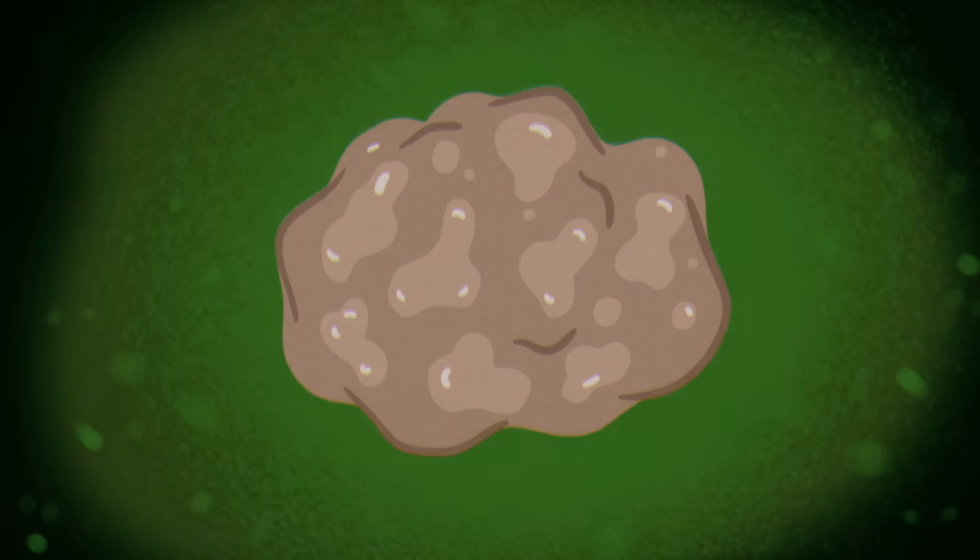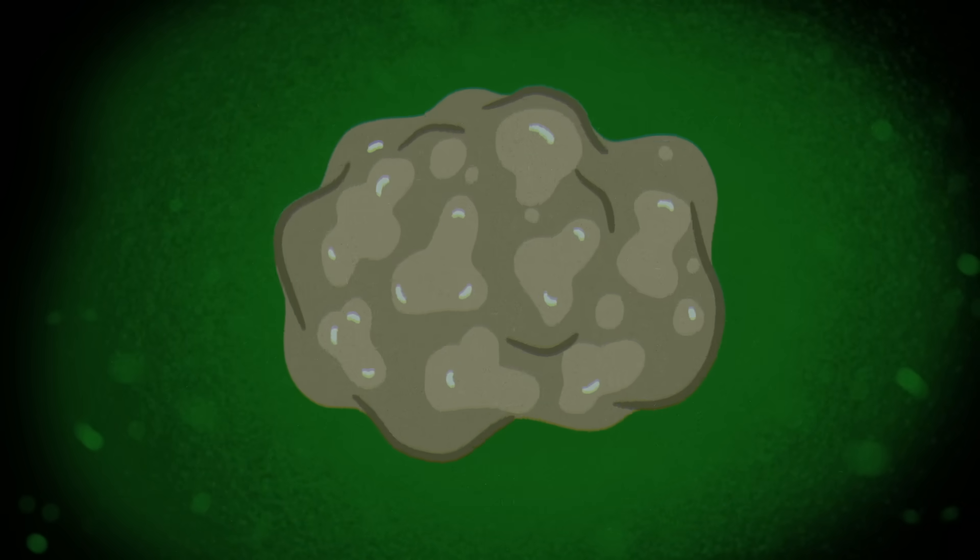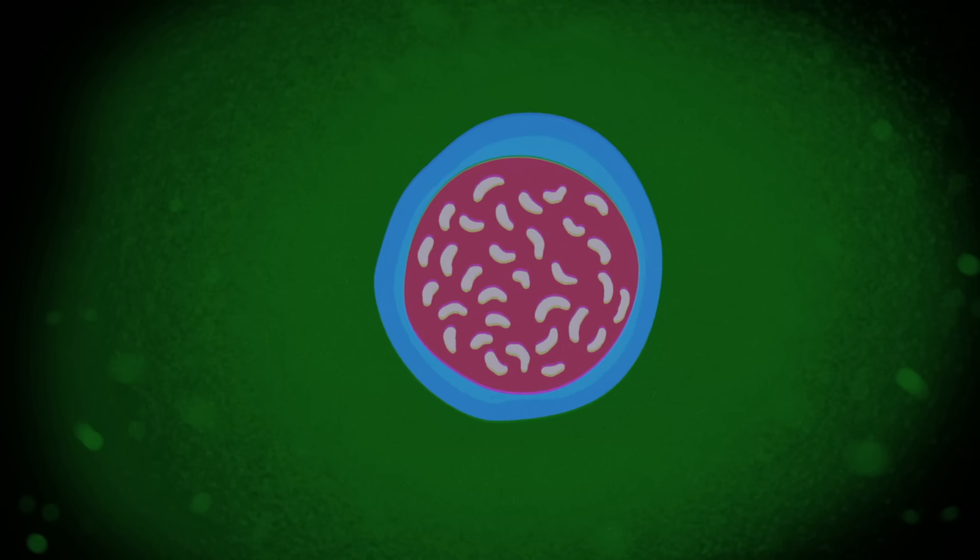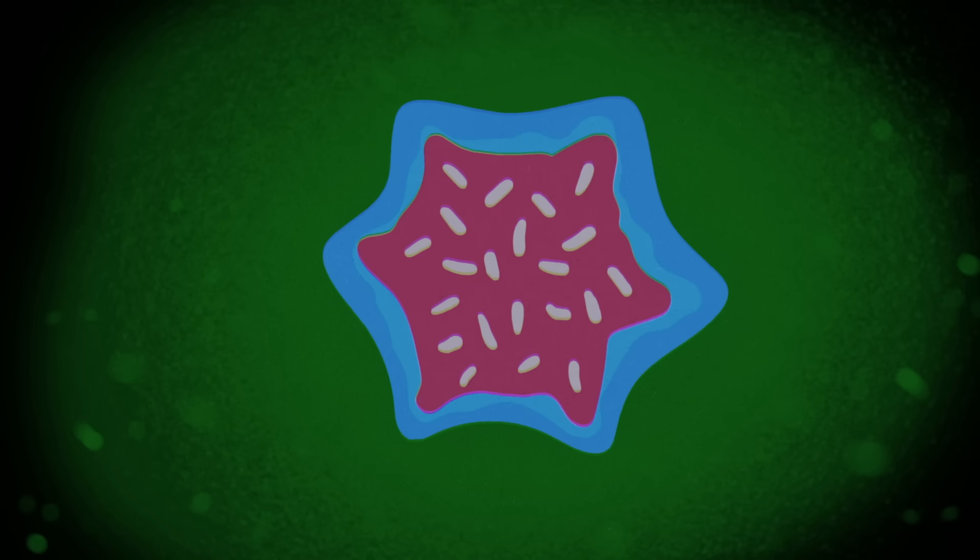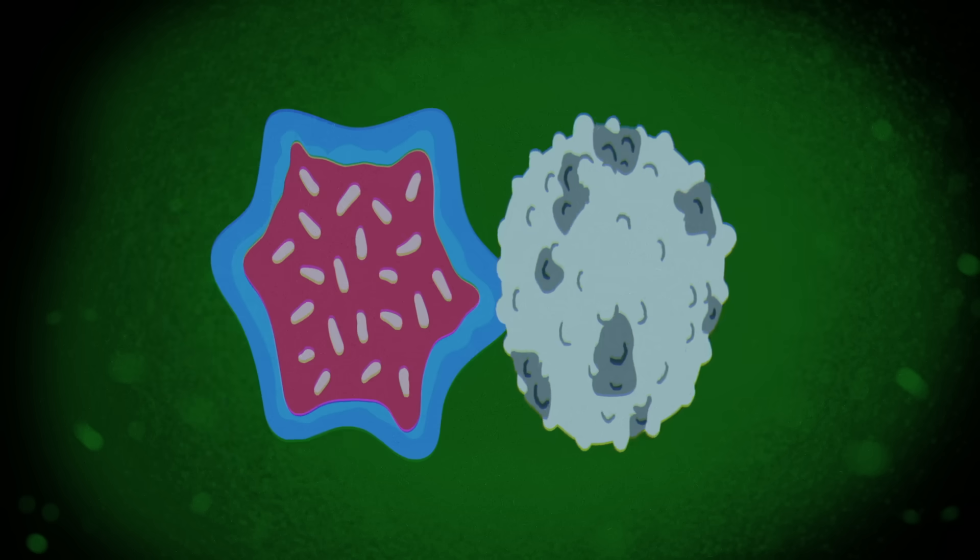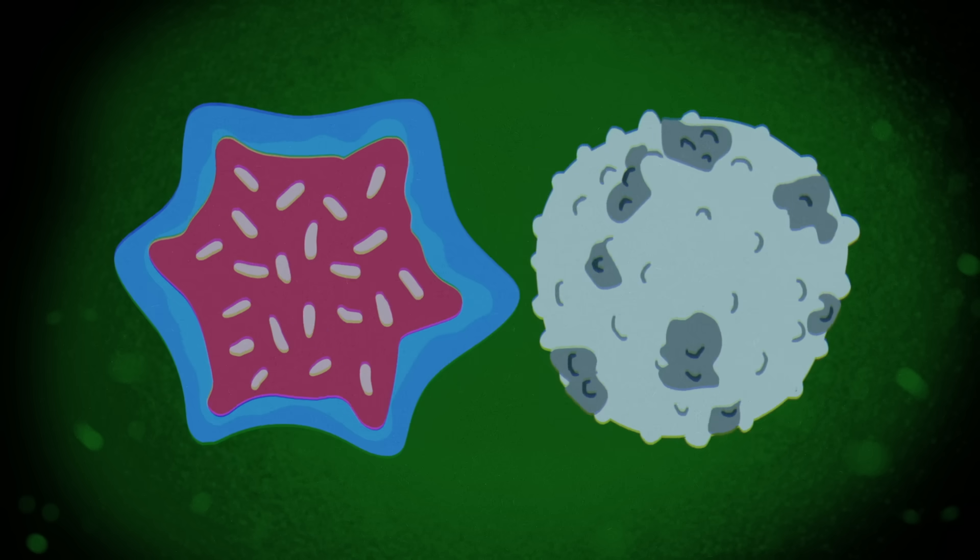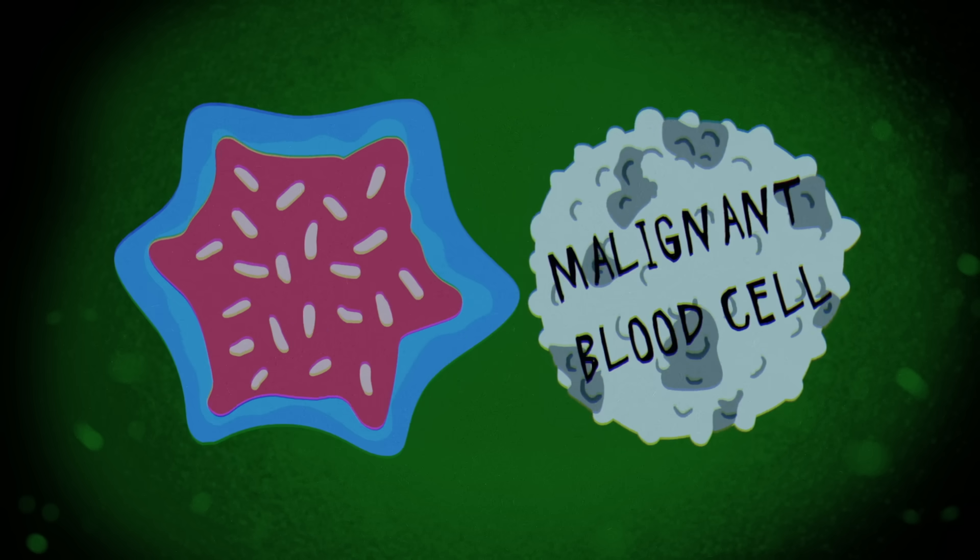If there's a problem with your blood, there's a good chance it can be traced back to the bone marrow. Blood cancers often begin with genetic mutations in the stem cells. The stem cells themselves are not cancerous, but these mutations can interfere with the process of differentiation and result in malignant blood cells.